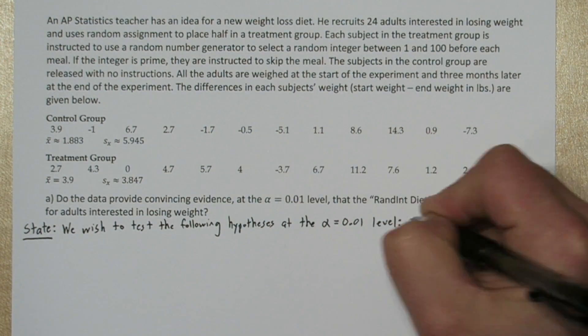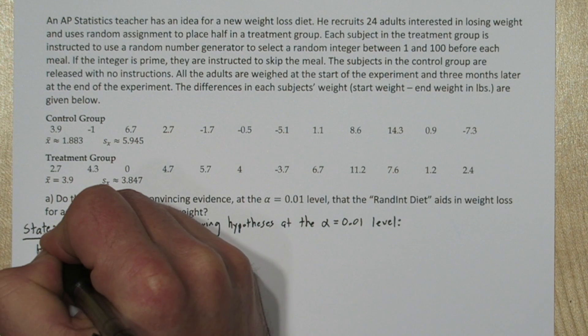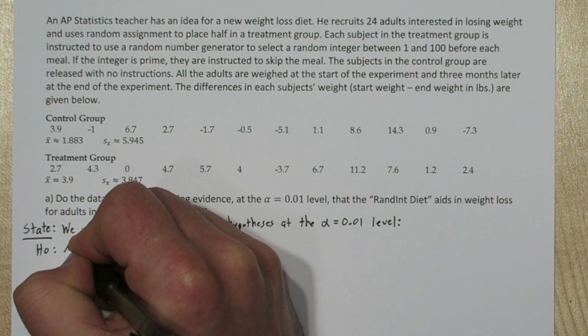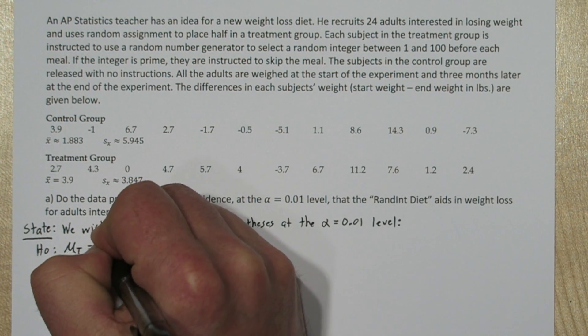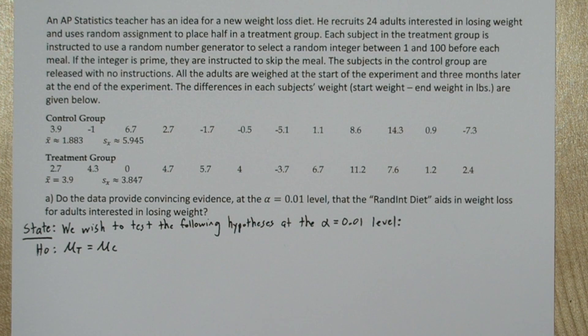So our null hypothesis is that there is no difference, that is mu sub t, the mean of the treatment group, equals mu sub c, the mean of the control group.